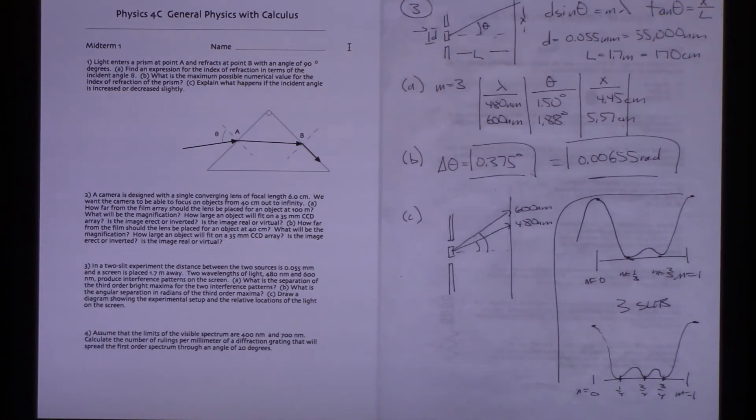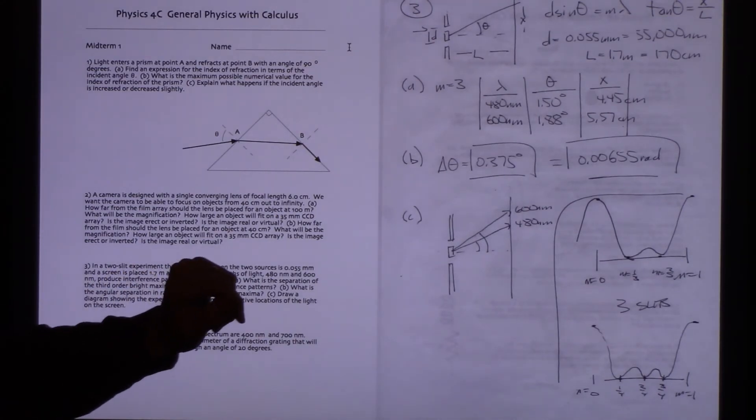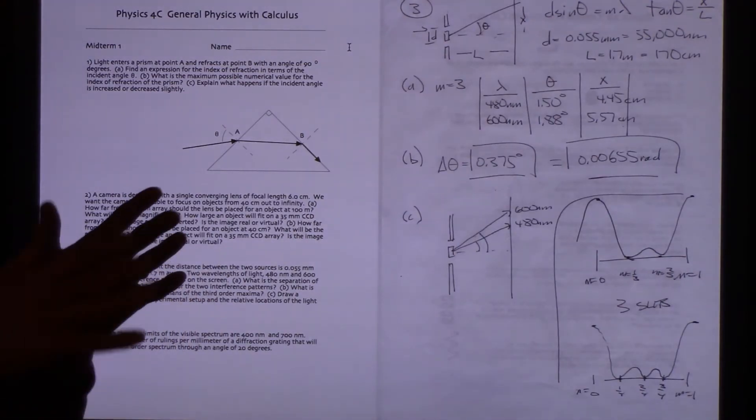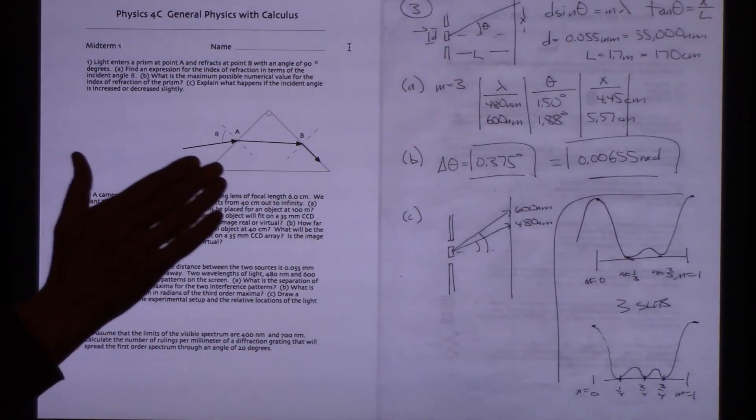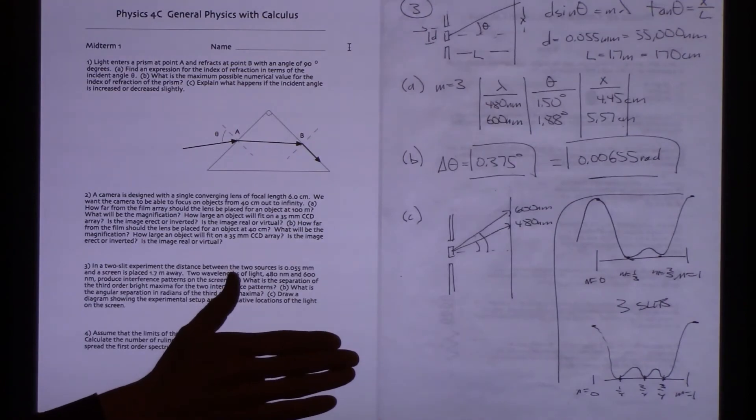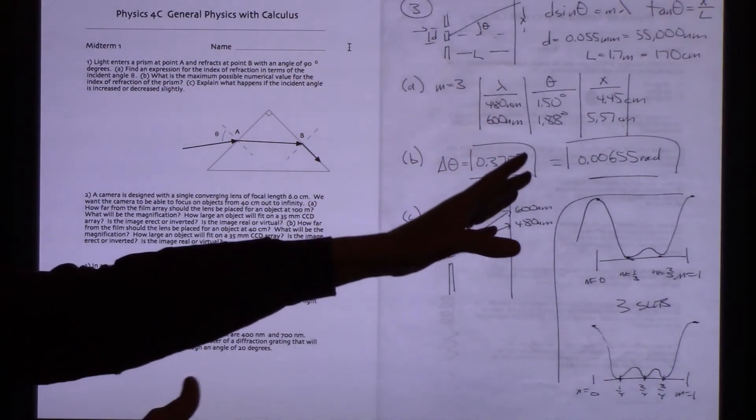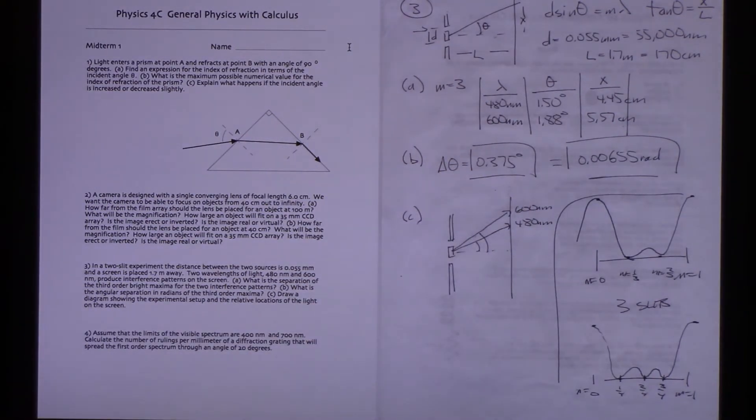And it works out that the angular separation is 0.375 degrees, and that works out to be 0.00655 radians. Is that all they asked for? They did ask for the separation. I never wrote it down, but that's easy enough to subtract. There's going to be a 1.12 centimeter separation between when we're using the 480 nanometer, probably kind of blue-like, and the 600 nanometer, probably kind of orange light, there's going to be a 1.12 centimeter difference in locations on the screen.